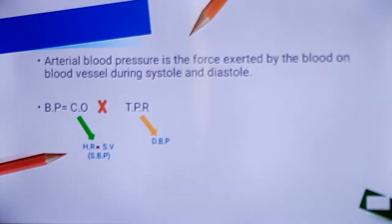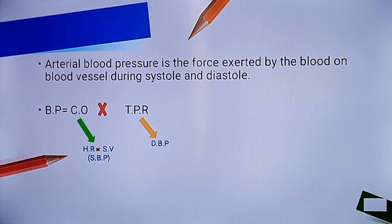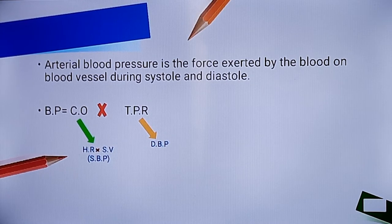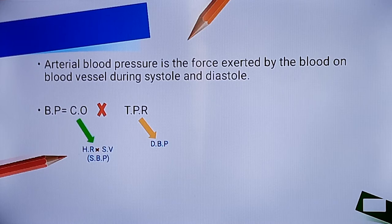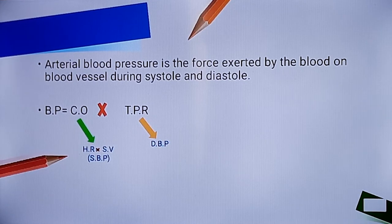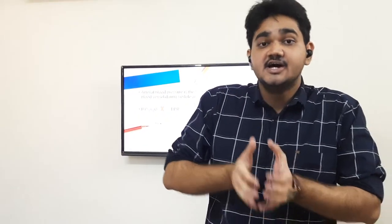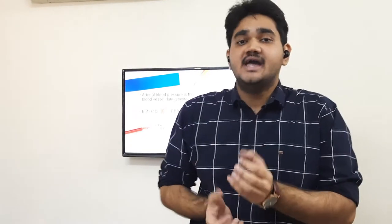This blood pressure is mainly dependent on two main factors: the first is cardiac output and the second is total peripheral resistance. Cardiac output further depends upon two main things: heart rate and stroke volume. Heart rate simply means how many times our human heart is beating in one minute.